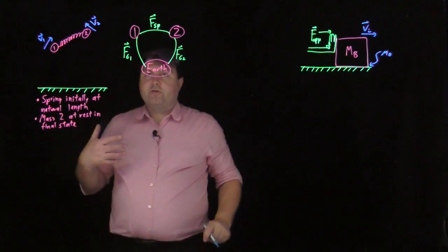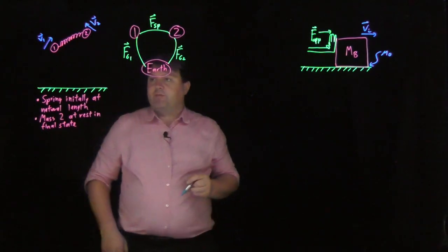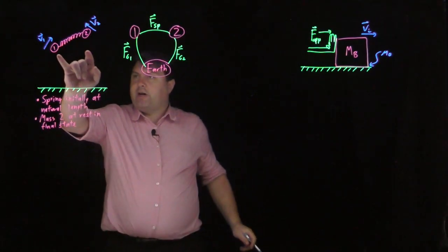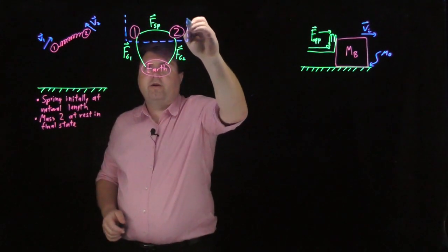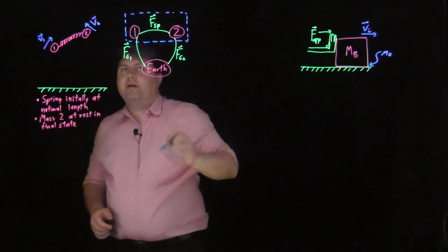Now that we have that, we want to choose our system, which objects are going to be in our system. Since we want to track the motion of both one and two, we're going to have a system containing both one and two.